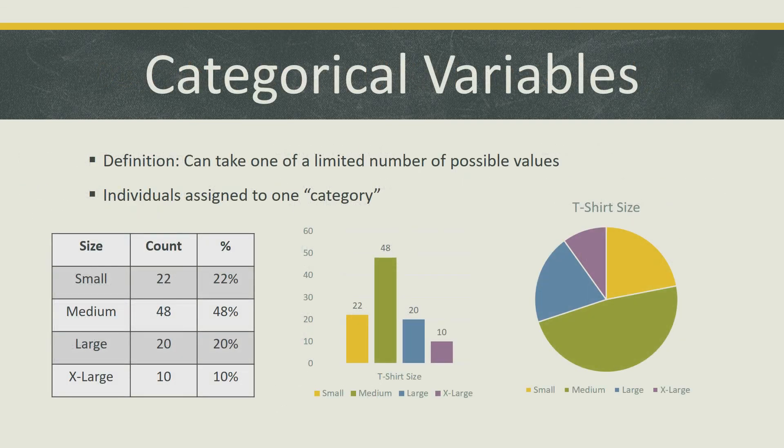Now that we have reviewed various descriptive measures used in univariate analysis, let's examine the two specific types of variables used in these types of analyses. Categorical variables, also referred to as discrete variables, can take on one of a limited number of possible values. They typically involve the assignment of individuals in a dataset to a specific group or category. Some examples consist of eye color, sizes, and diseases.